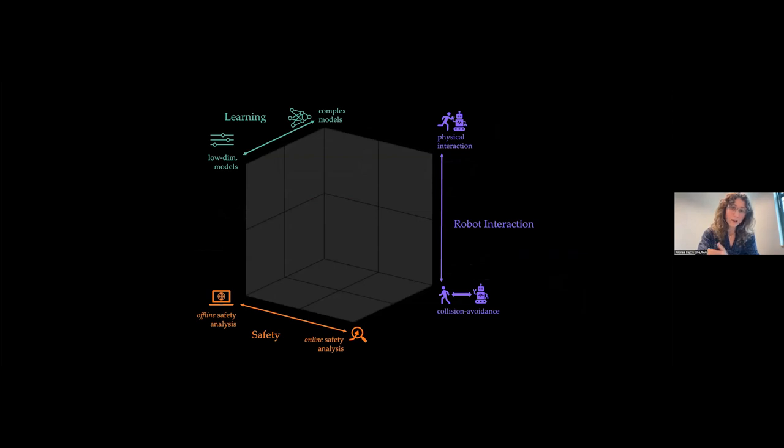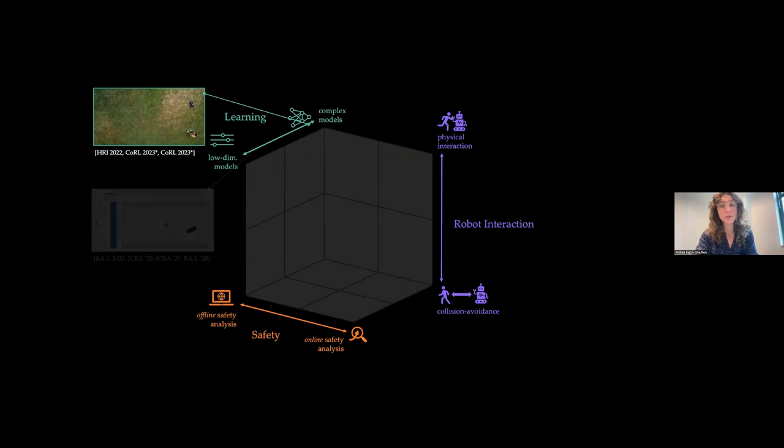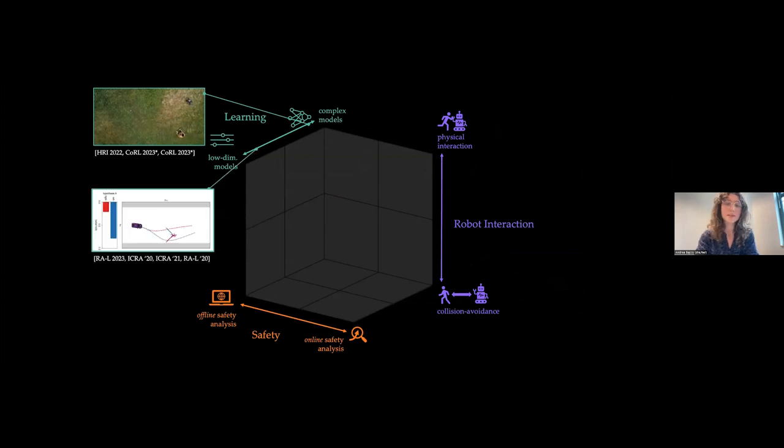Secondly, in all these contexts, robots are learning. This learning can happen via complex function approximators, such as neural networks, or lower-dimensional learning models, like you see here on the bottom picture.